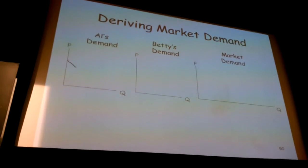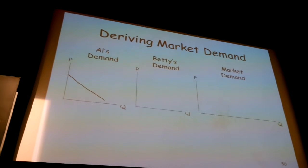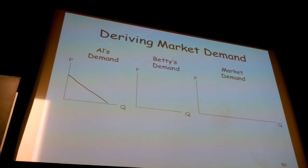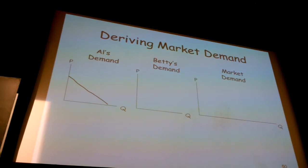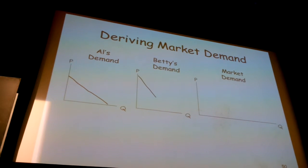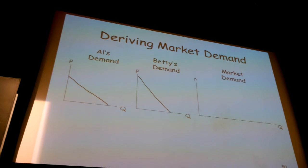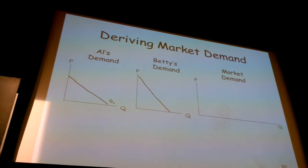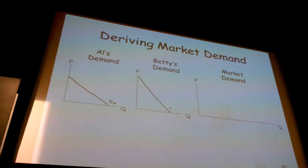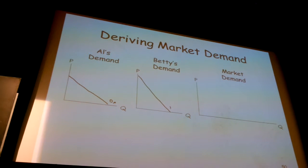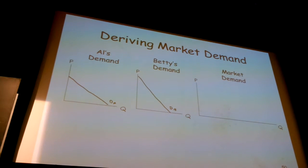Al and Betty don't have to be the same — there's no reason why they have to have similar-looking demand curves. We have Al's demand curve, which I'll label D sub A, and Betty's demand curve, which I'll label D sub B.